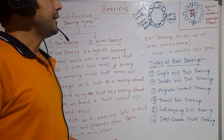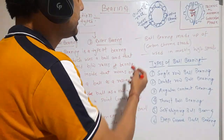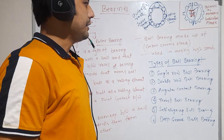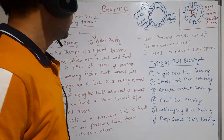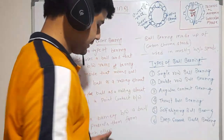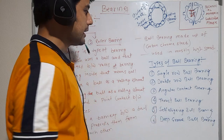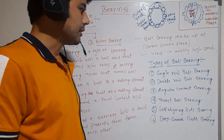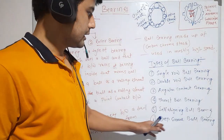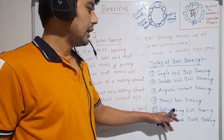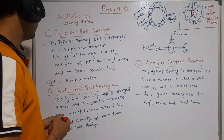Ball bearings are made up of carbon chrome steel and are mostly used in high-speed applications. Types of ball bearings include: first, single row ball bearing; second, double row ball bearing; third, angular contact bearing; fourth, thrust ball bearing; fifth, self-aligning ball bearing; and sixth, deep groove ball bearing.